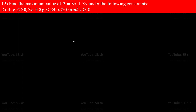Let's solve this question: find the maximum value of P = 5x + 3y under the following constraints: 2x + y ≤ 20, 2x + 3y ≤ 24, x ≥ 0, and y ≥ 0. This question is generally asked in question 11, 12, or question 22, either from linear programming or as a 'solve graphically' problem. One question from these two types is almost certain to appear, so I request everyone to practice this question thoroughly.